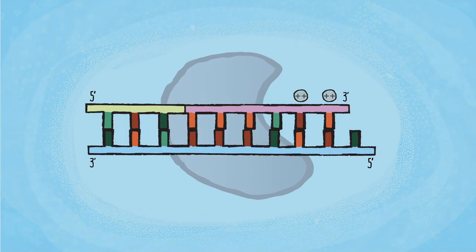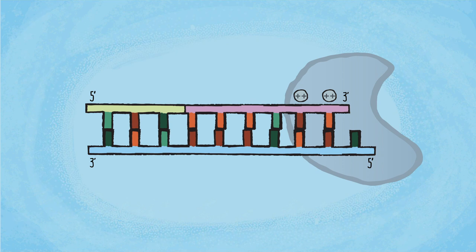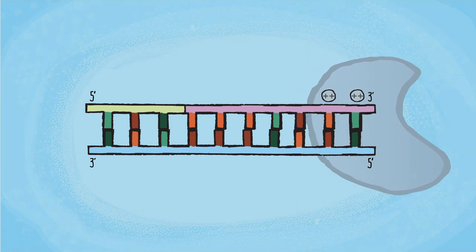The final extension step is to ensure that all of the products are fully extended by giving the polymerase a little extra time to add any missing nucleotides and allow for all of the products to be double-stranded.